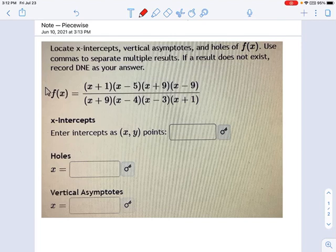For this problem, we're asked to determine the x-intercepts, the vertical asymptotes, and the holes of f of x. And we're not given a graph to do it, we're just told to pull it out of this equation somehow.